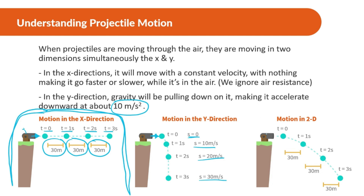When we look at both X and Y together, the projectile moves at constant velocity in the X direction but gets faster and faster in the Y direction, creating that parabolic path.